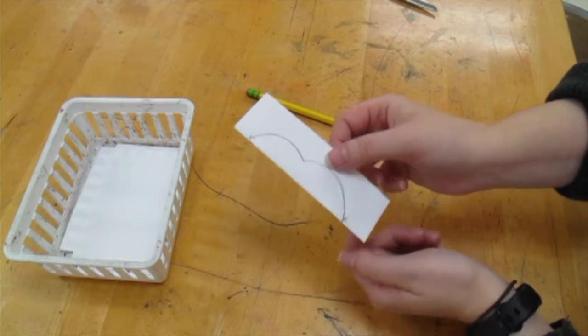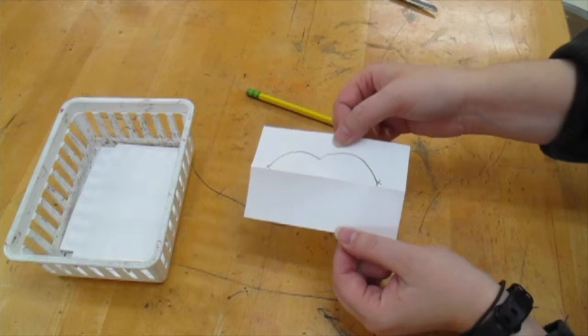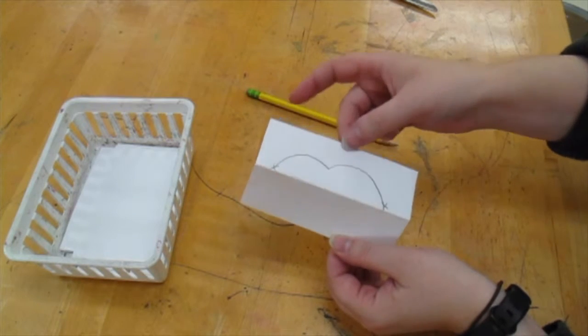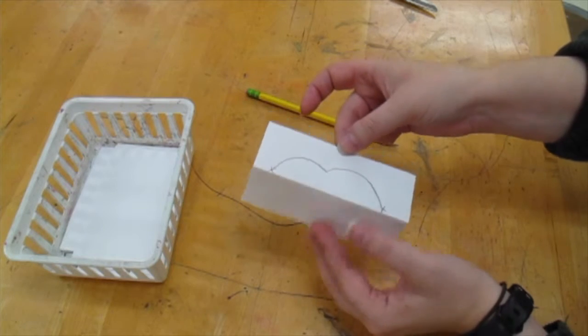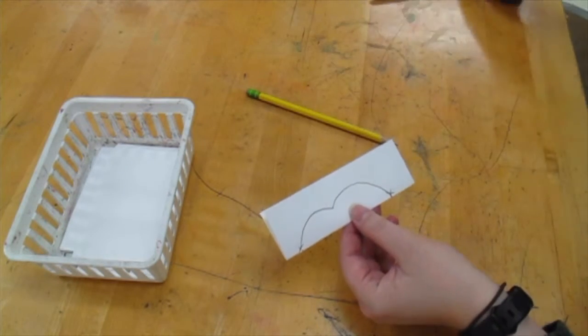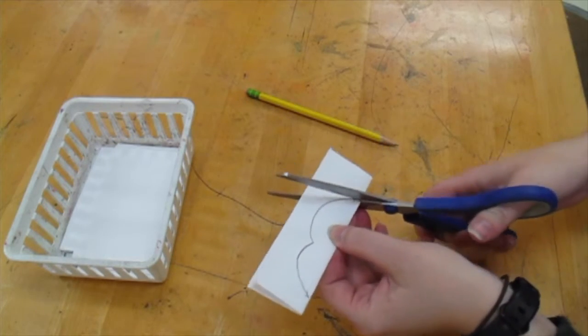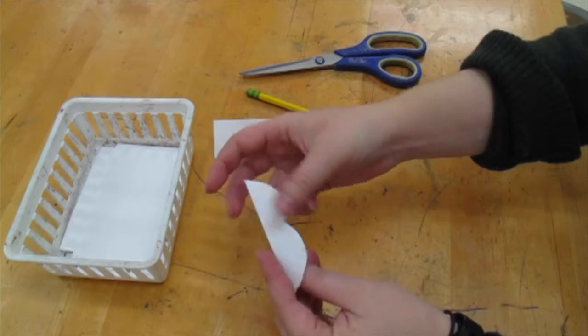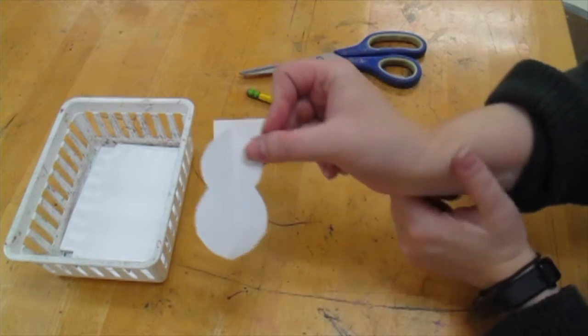Before I cut, I'm going to open up and check if this is touching the folded line. That's touching the folded line. I'm going to close it and now I'm going to cut. I should get one shape that is symmetrical.